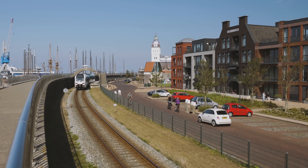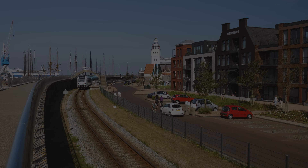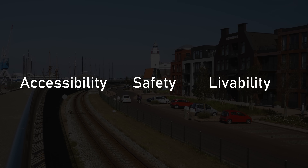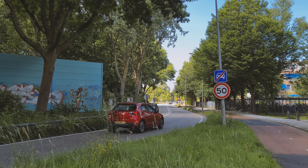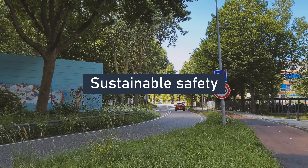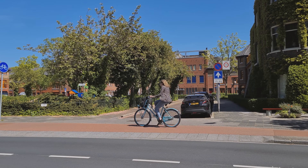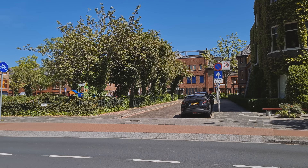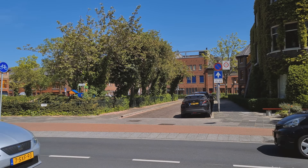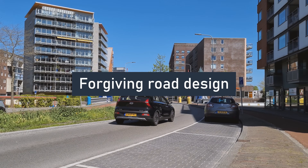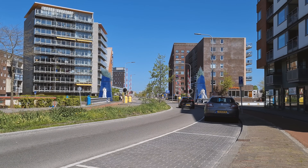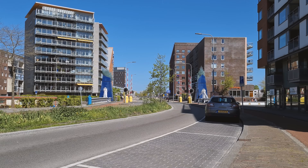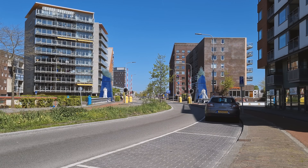A sustainable road network strikes a balance between accessibility, safety, and livability. Since the 1990s, the Dutch have adopted the concept of sustainable safety, which implies that roads are designed to prevent serious crashes and reduce the severity of those crashes that occur. Creating a forgiving road design reduces the likelihood of serious injury or death in the event of a crash.